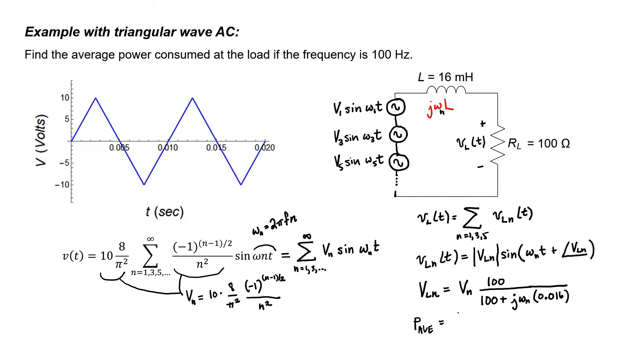The problem asks us to find the average power consumed in the load resistor. To find the average power, I'm going to find the time-varying power over one period and take the average. The formula for instantaneous power is v² / R, so I'm integrating over one period of the instantaneous power to calculate its average. Superposition can only be used to calculate things that are linear, so we can use it to calculate the voltage across the load resistor due to all these sources in series. But we can't use superposition to say that the power across the load resistor is the sum of the powers due to each source.